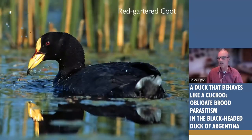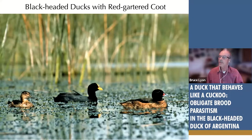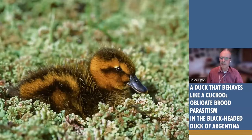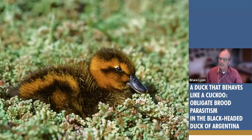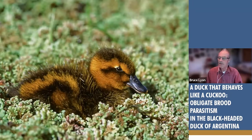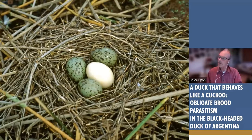Even the coots are different — this is a red-gartered coot, not an American coot. And some things just don't have ecological replacements. Here's a duck — we have ducks in California, but not like this one. This is a really unique duck: the black-headed duck. What's unique about a baby black-headed duck is it never meets its biological parents, because this species lays its eggs in the nests of other birds. They never have their own nest — they are complete, professional brood parasites. That duckling might have come out of a gull nest.